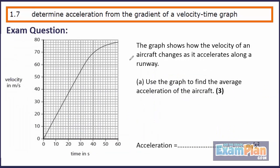Let's look at one more example. The graph shows how the velocity of an aircraft changes as it accelerates along a runway. Use the graph to find the average acceleration of the aircraft. In this question, we need average acceleration, so we do the total change in velocity divided by the total time taken.